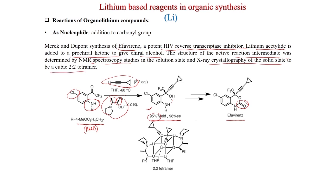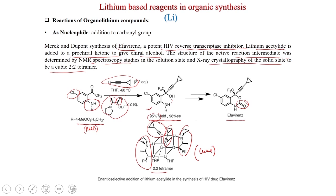In the tetramer, two equivalents of ligand and two equivalents of lithium acetylide assemble so that lithium-oxygen and lithium-carbon bonds form a cubic cluster. This chiral lithium species adds selectively to the carbonyl compound. This is an enantioselective addition of lithium acetylide in the synthesis of an HIV drug, published in JACS.